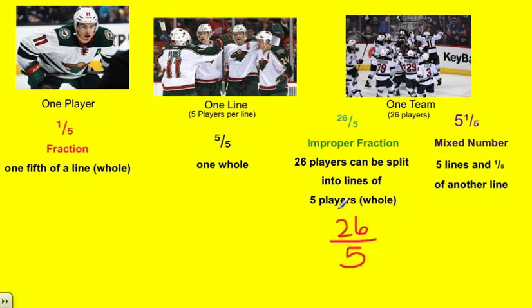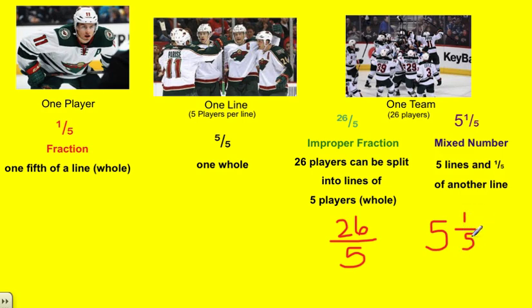It's an improper fraction because the numerator has more than the denominator. So in order to make this into a mixed number, we can divide, or we can think about how many wholes we can take out of 26. How many lines can we make out of 26 players? 5 goes into 26 five times, and there's going to be 1 player left out of 5. If we could get 4 more players, we'd have another whole. But we only have 1 player out of 5, so we can't make a whole other line — we have 1 fifth of a line.